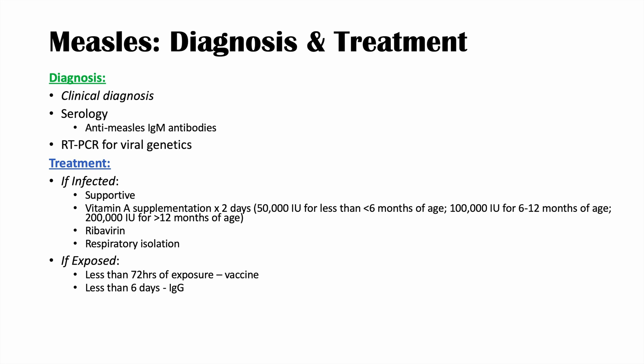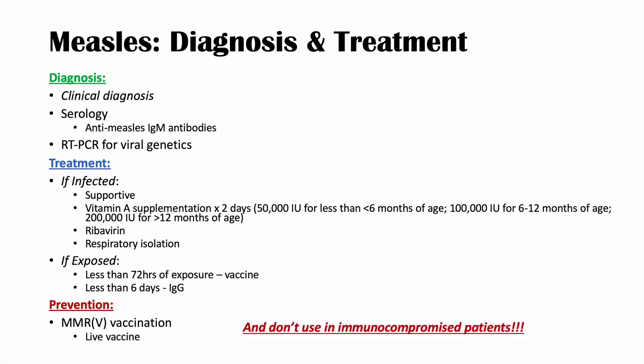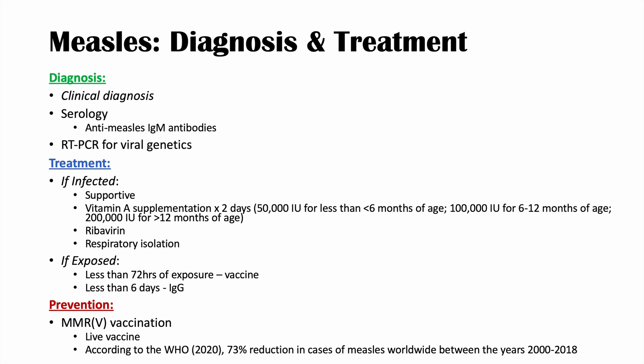The best approach is to prevent measles infection in the first place, and the best way to do that is using the MMR or MMRV vaccinations — measles, mumps, rubella, and varicella. These are live vaccinations, so they are not used during pregnancy. The WHO has estimated a 73% reduction in measles cases worldwide between 2000 and 2018, largely due to widespread vaccination. Because of the severe and delayed complications like SSPE, vaccination is critically important.